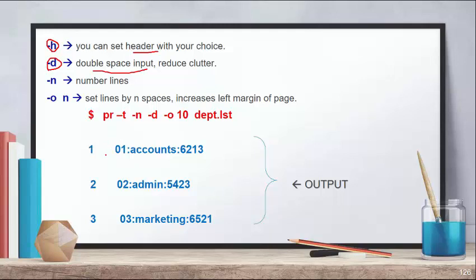Then there is the minus N option, which is used to display line numbers — each line will have a number shown in front of it. Next is minus O, which is used to set spaces and increase the left margin of the page. For example, if you want your output to appear after 10 spaces from the left side, you use minus O followed by a number like 10.